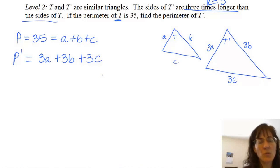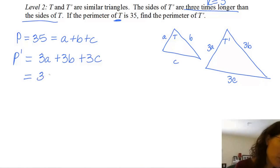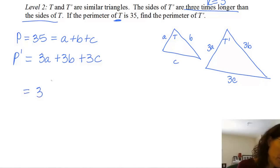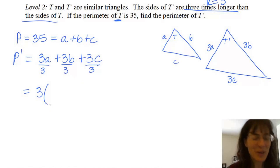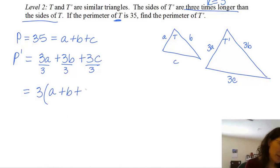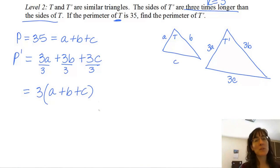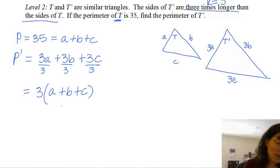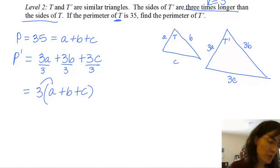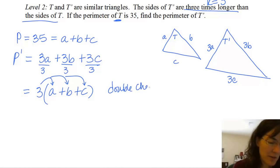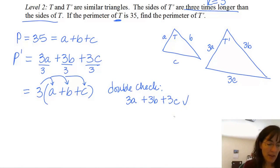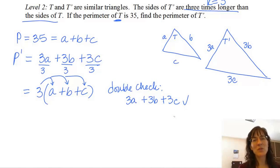I would dearly love to get that as a plus b plus c somehow, because I see I have 35 equal to that. So I want to factor out a 3, which means I'm doing the reverse distributive property — pulling a 3 out. Basically I'm dividing each term by 3, and I end up with 3 times the quantity a plus b plus c. Let me double-check by multiplying 3 back inside the parentheses: that gives 3a plus 3b plus 3c, which matches, so I factored correctly.